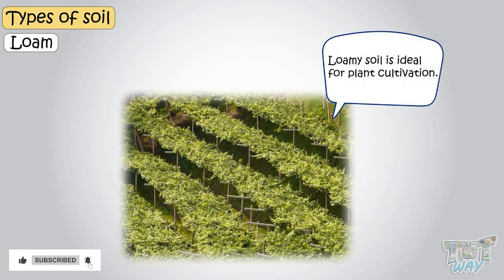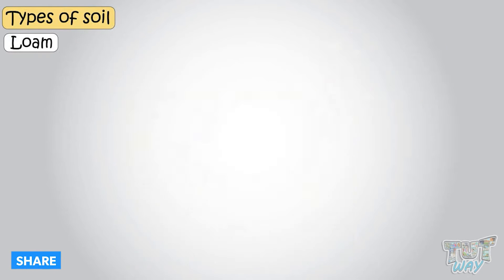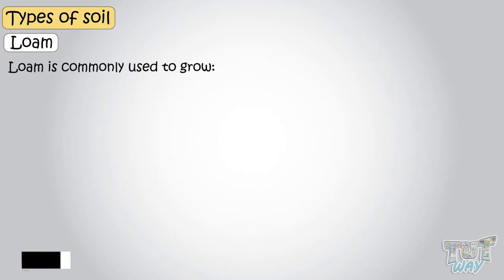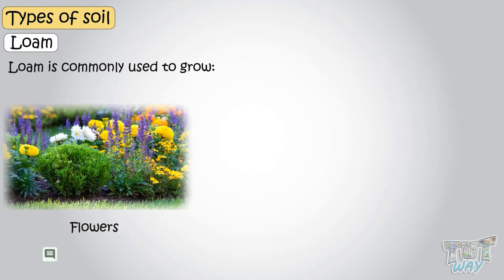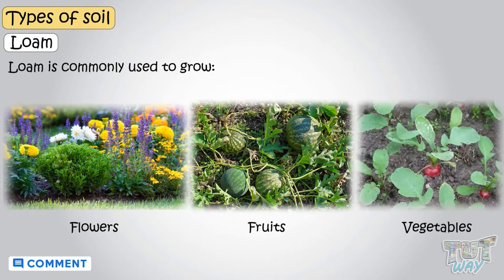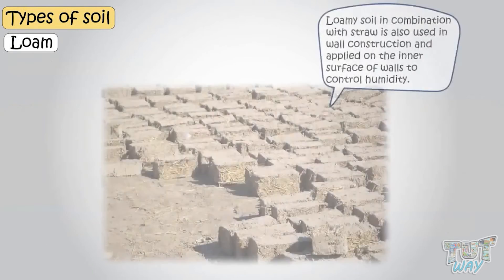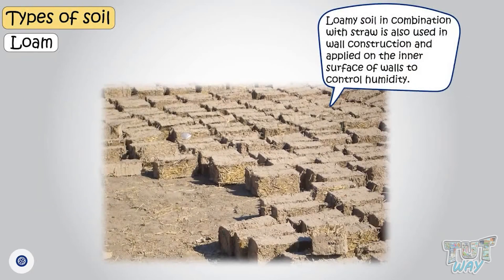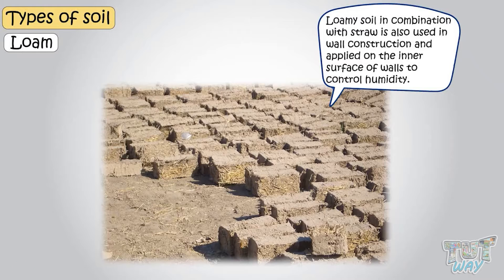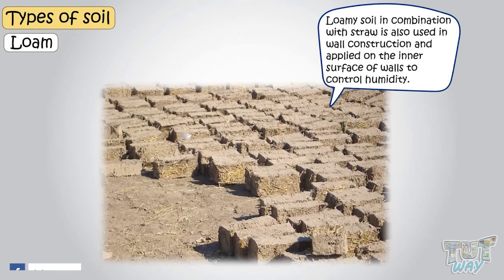Loamy soil is ideal for plant cultivation and is commonly used to grow flowers, fruits, and a variety of vegetables. Loamy soil in combination with straw is also used in wall construction and applied on the inner surface of walls to control humidity.